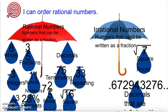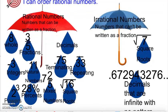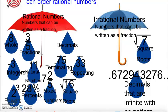Let's review. First of all, let's talk about rational numbers. Rational numbers, remember, are numbers that can be written as a fraction. And in the beginning of the year, we talked about all these different types of rational numbers. Today we're going to focus on fractions, and over the next few targets we're going to talk about percents as well as decimals.